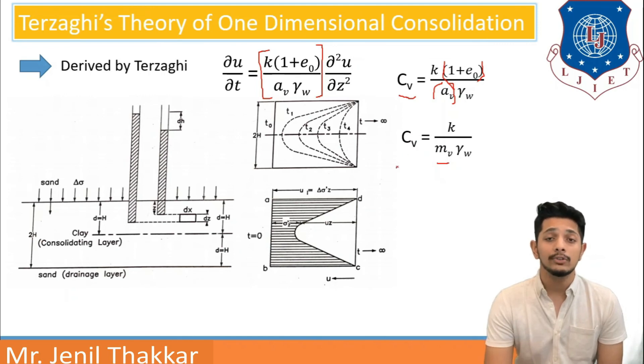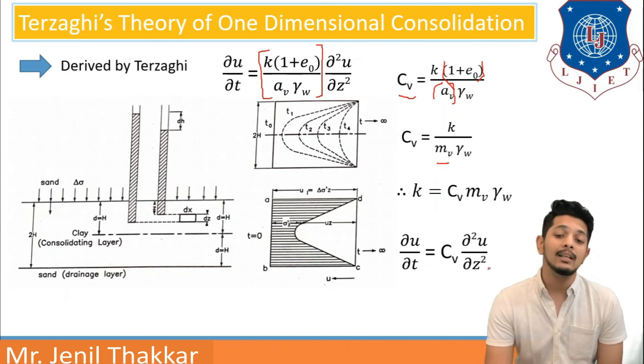If we want to find coefficient of permeability k, we can find k equals cv into mv into gamma w. And hence, we can write del u by dt equals cv into del square u by del z square.